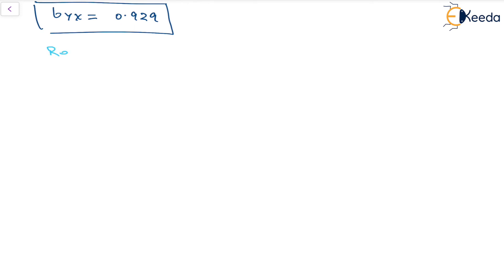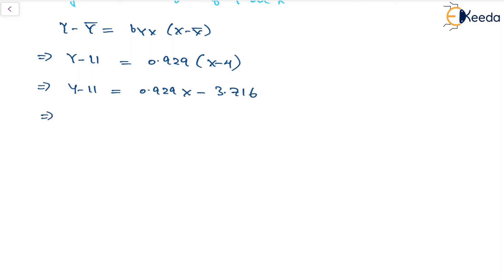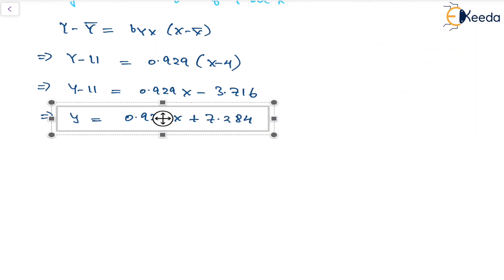Now, finding the regression equation of y on x: the general formula is y − ȳ = byx × (x − x̄). Putting in all the values, we have y − 11 = 0.929 × (x − 4), which simplifies to y − 11 = 0.929x − 3.716. Taking 11 to the other side, we get y = 0.929x + 7.284. This is the regression equation of y on x.